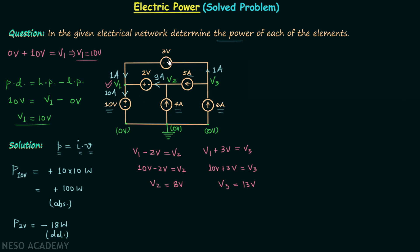For the 3 volt element: the 1 ampere current enters the positive terminal, so the sign is positive. Magnitude = 1 × 3 = 3 watts. Power is absorbed and this element acts as a sink.